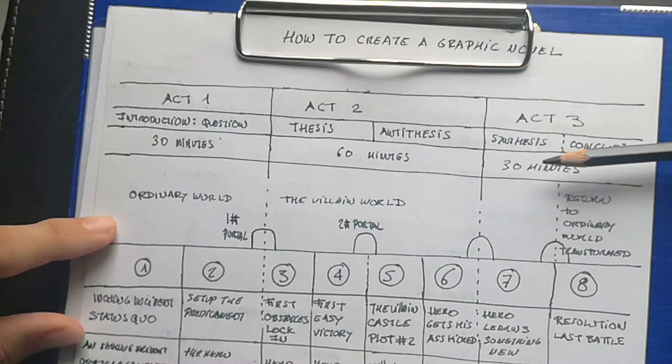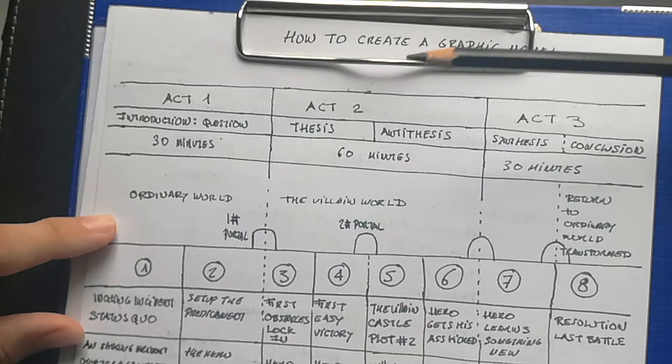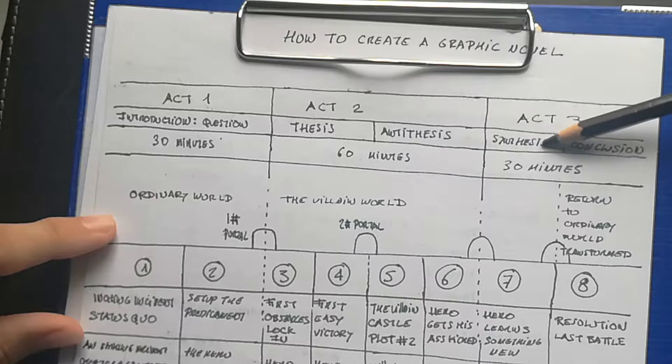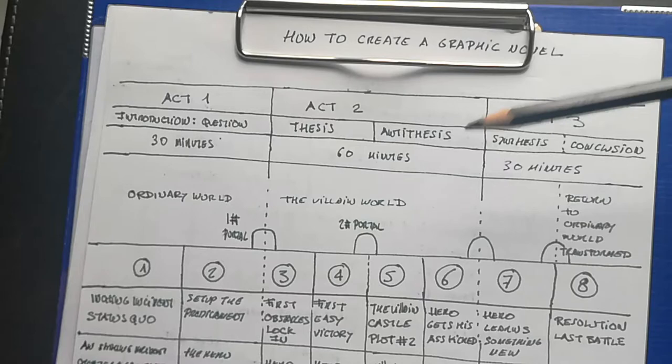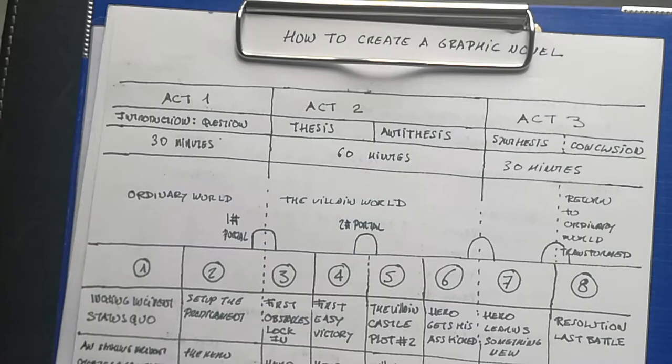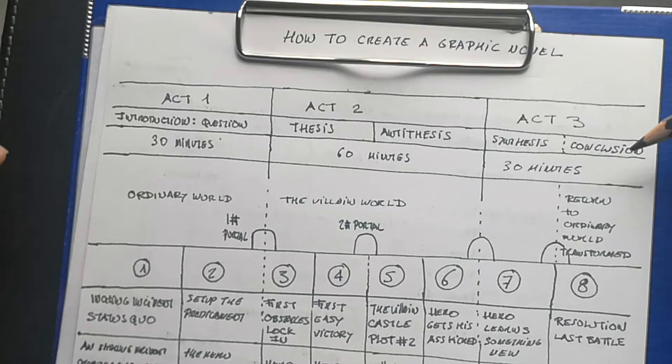Every character in your story follows this process, so you must be able to tell the story from any character's point of view. In Act 3, there is a synthesis — a new way for your character to fix or answer the question — and a final confrontation between the hero and the villain to create that synthesis and conclusion.